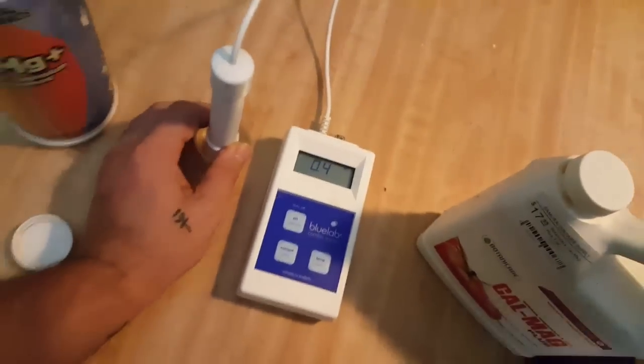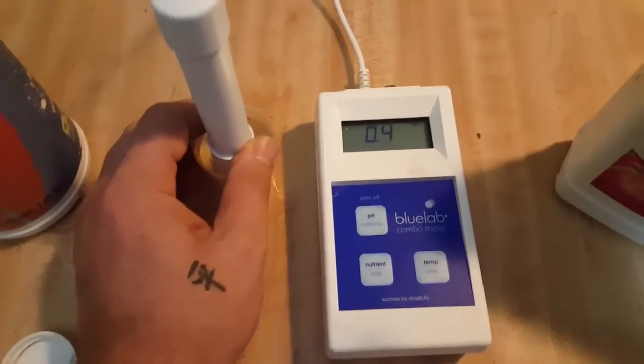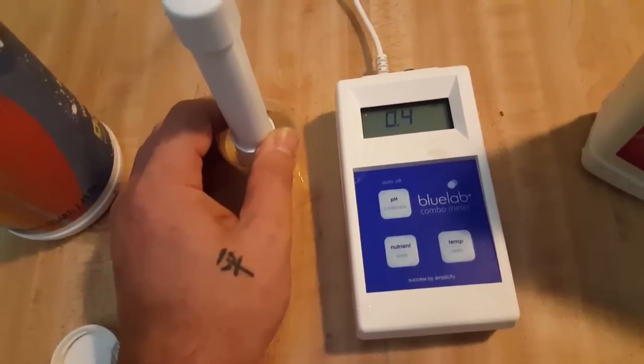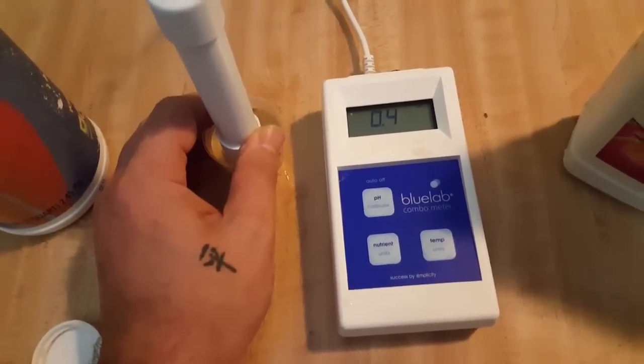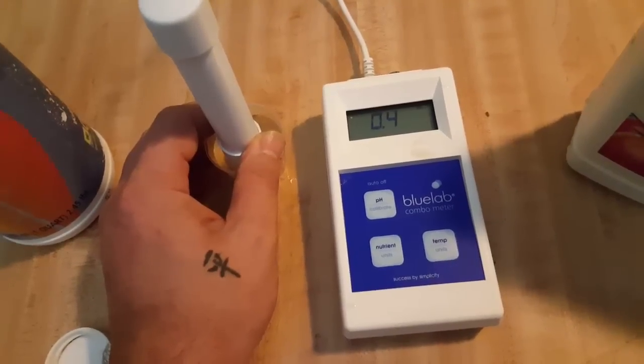And just to eliminate that confusion, it would be kind of a bummer if someone's like, oh, okay, so I'm supposed to be watering with 900 ppm, and really, okay, 900 ppm on the other measuring scale, the 700 one, is like 1,200 ppm. That's a huge difference.